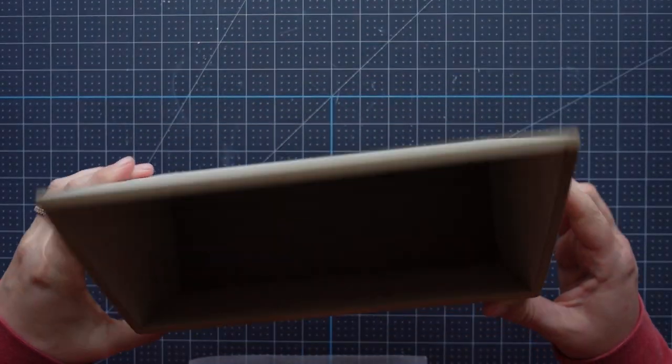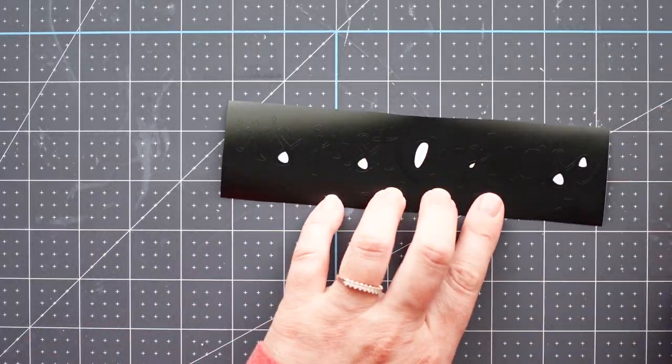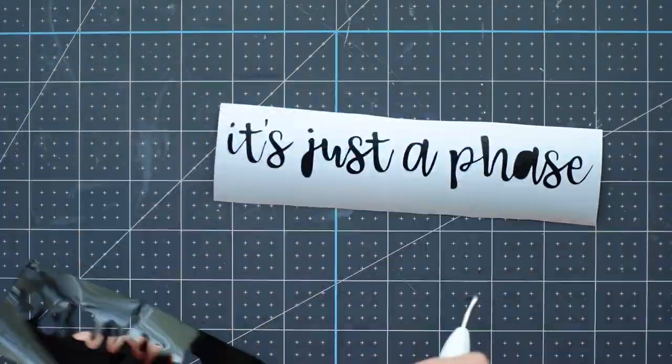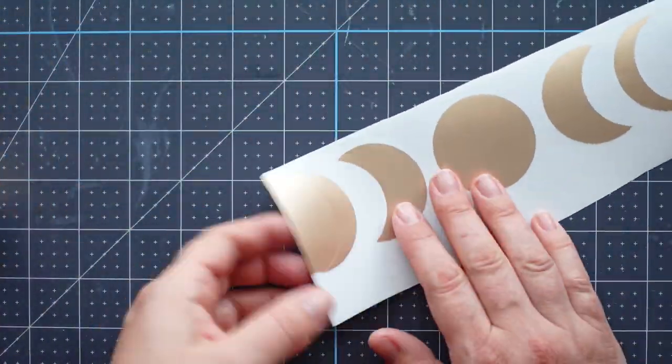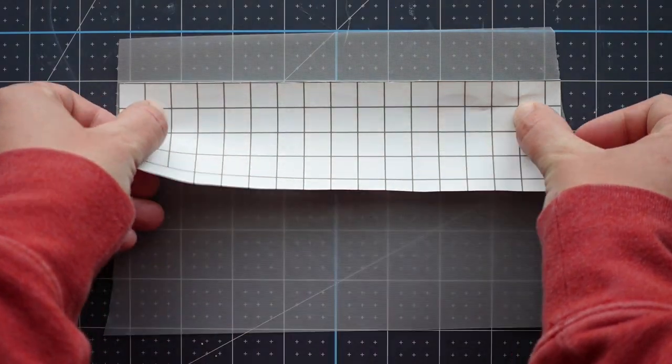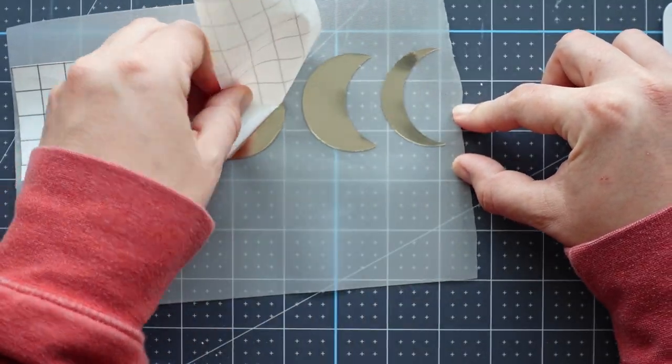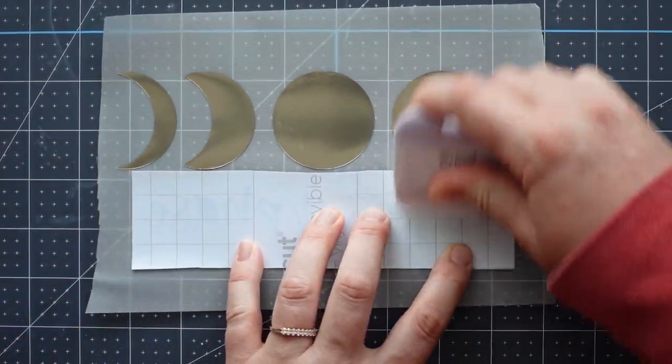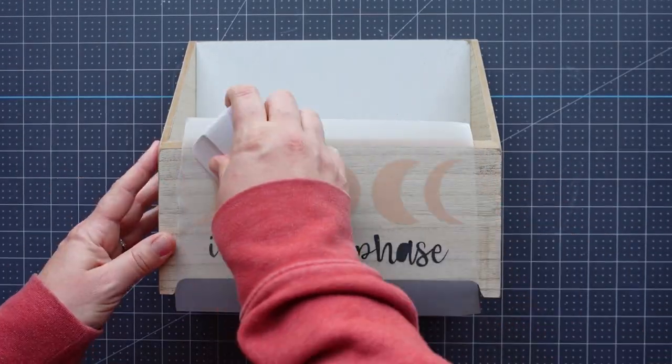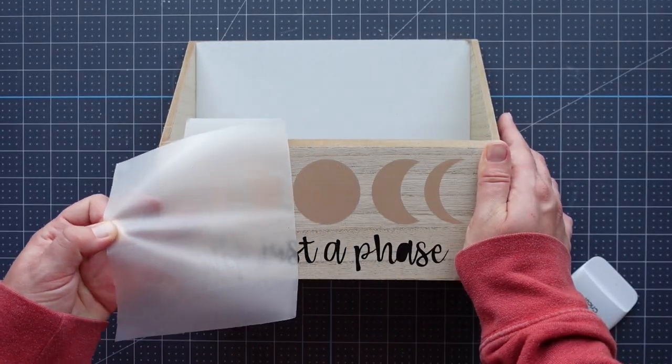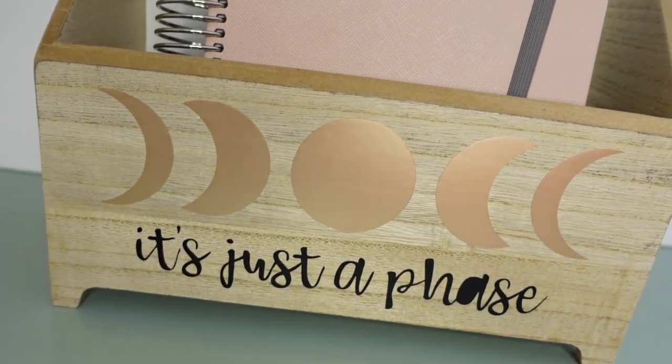For this project, I wanted to upgrade a book box from the Target Dollar Spot. I used my Cricut machine to cut the words "It's just a phase" out of matte black vinyl. I also cut the phases of the moon out of that same metallic vinyl from earlier. After weeding the moon phases and the text, I placed them down onto a large piece of transfer tape and removed the white backings from both. I applied the vinyl to the center of the crate, removed the transfer sheet, and that was it for this simple upgrade. Let's hope that my daughter's books actually make it into this box.